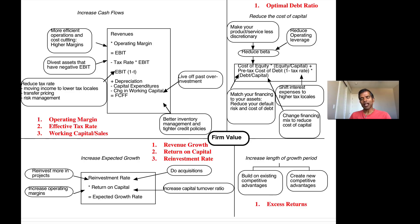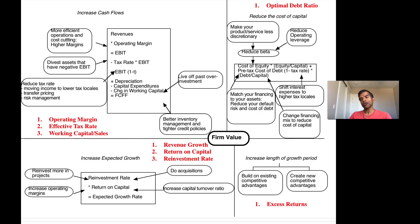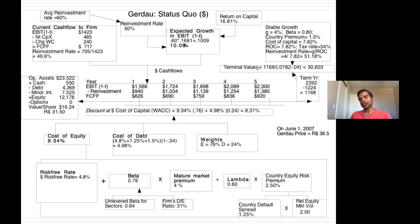There are three other things to consider beyond the debt ratio. First, if you've mismatched your debt to your assets — short-term debt funding long-term assets, or dollar debt funding euro assets — get rid of that mismatch, because it increases default risk and raises your cost of debt and capital. Also, if you can make your products and services less discretionary, you're effectively lowering your cost of capital, as is lowering the fixed costs you have as a company. So: go for increased cash flows, get more value from growth by cutting back if earning less than cost of capital or increasing reinvestment if earning more, improve your competitive advantages, and try to lower your cost of capital.